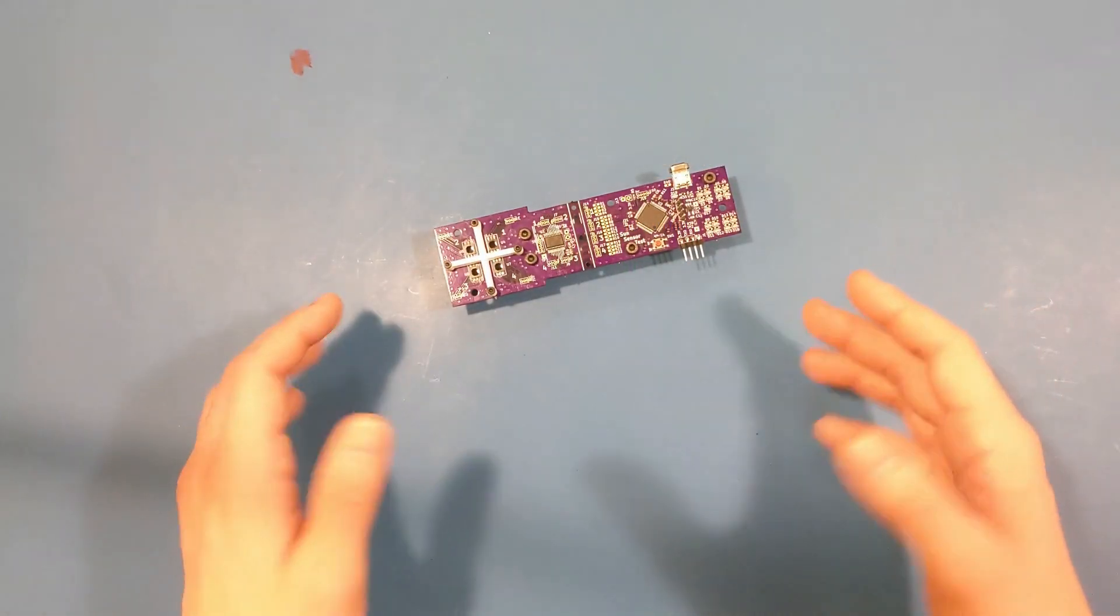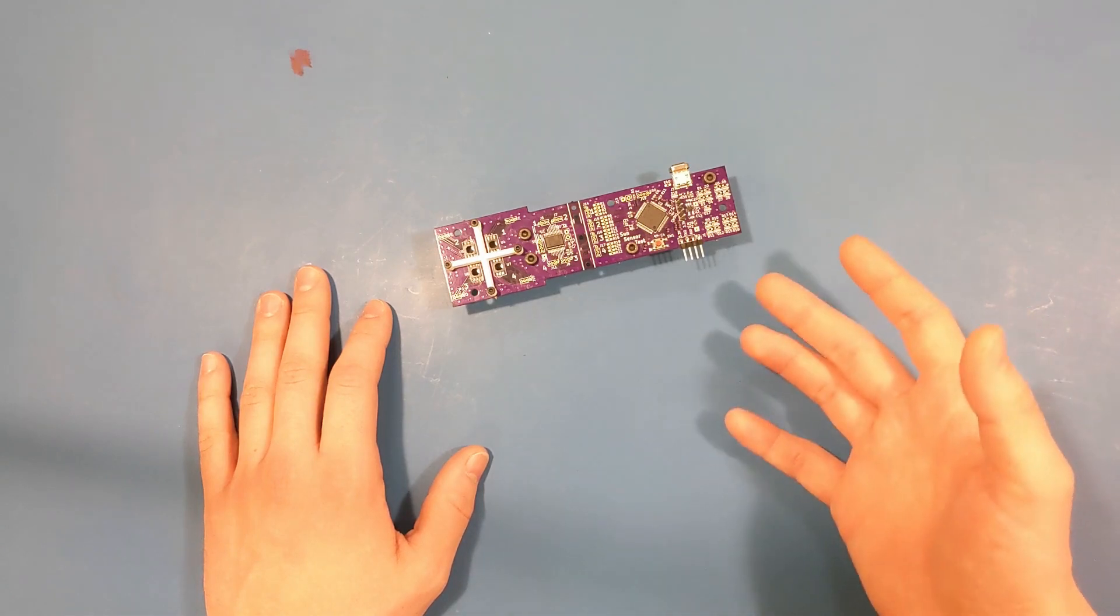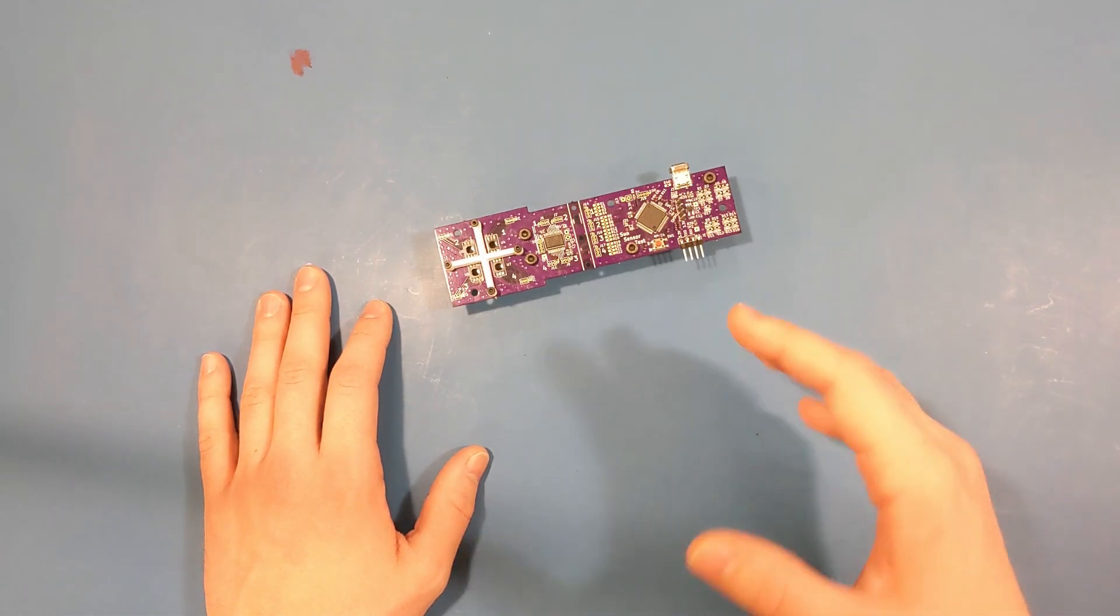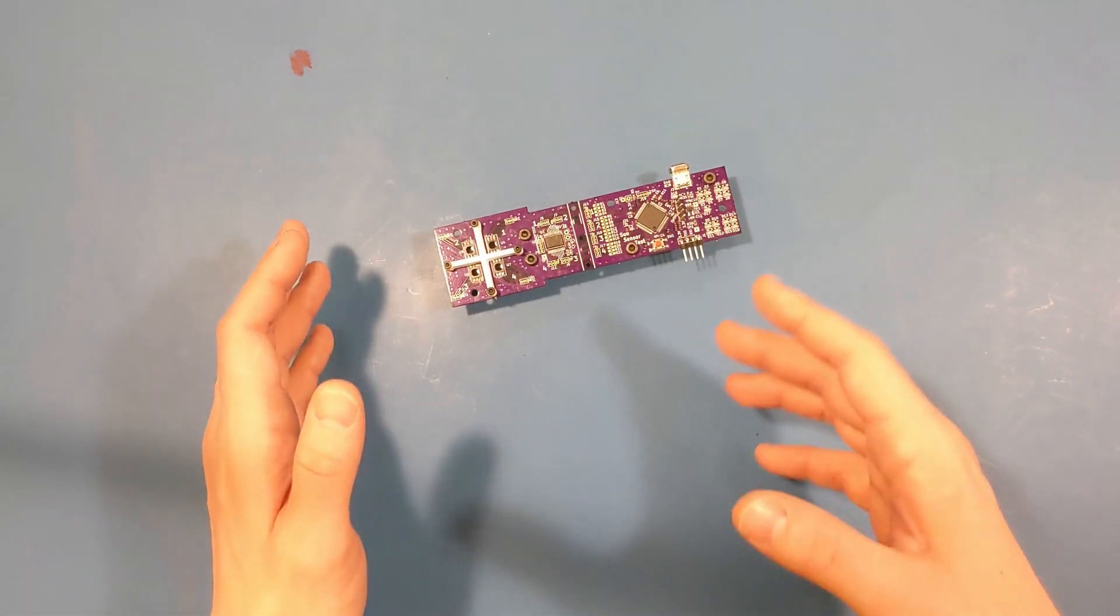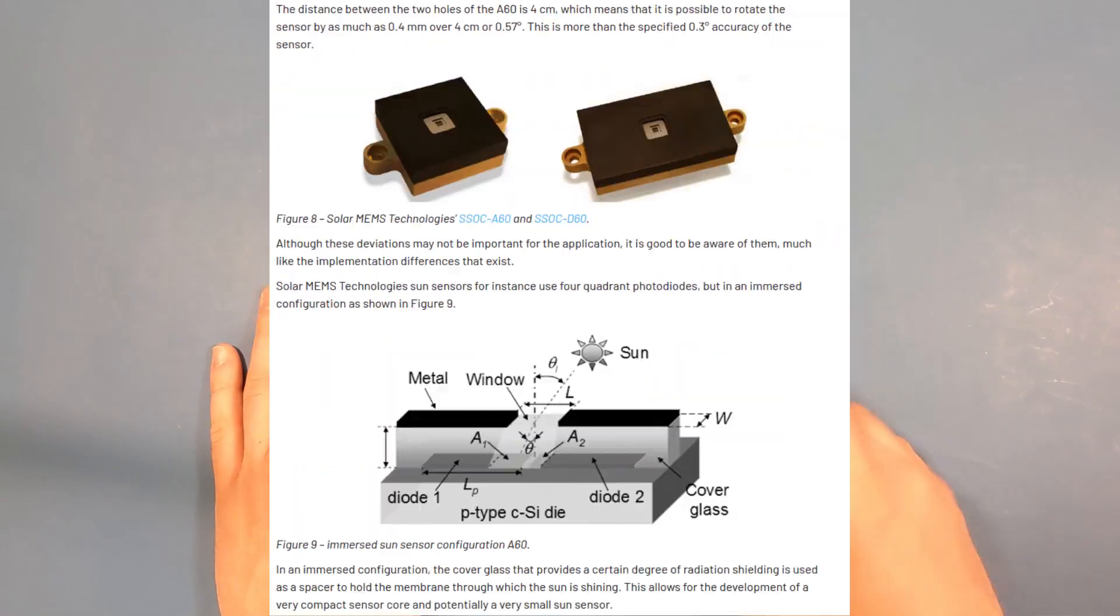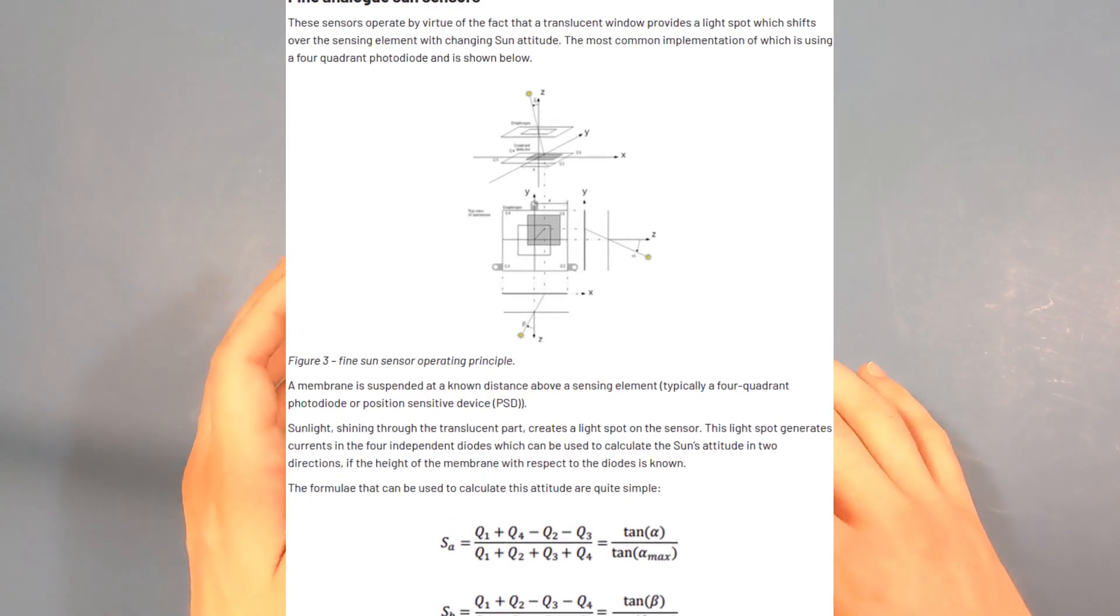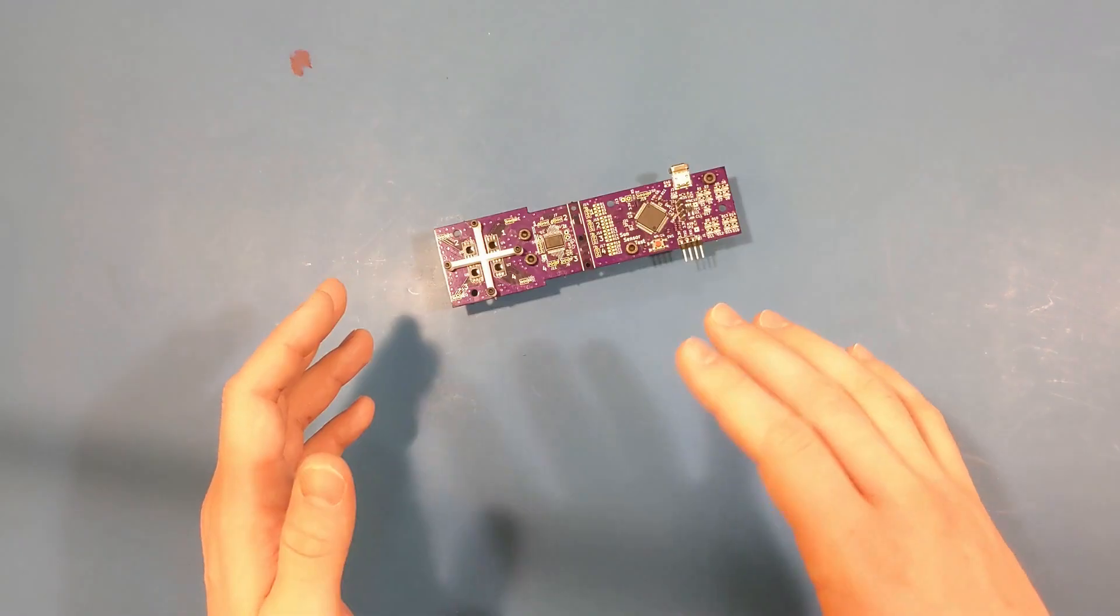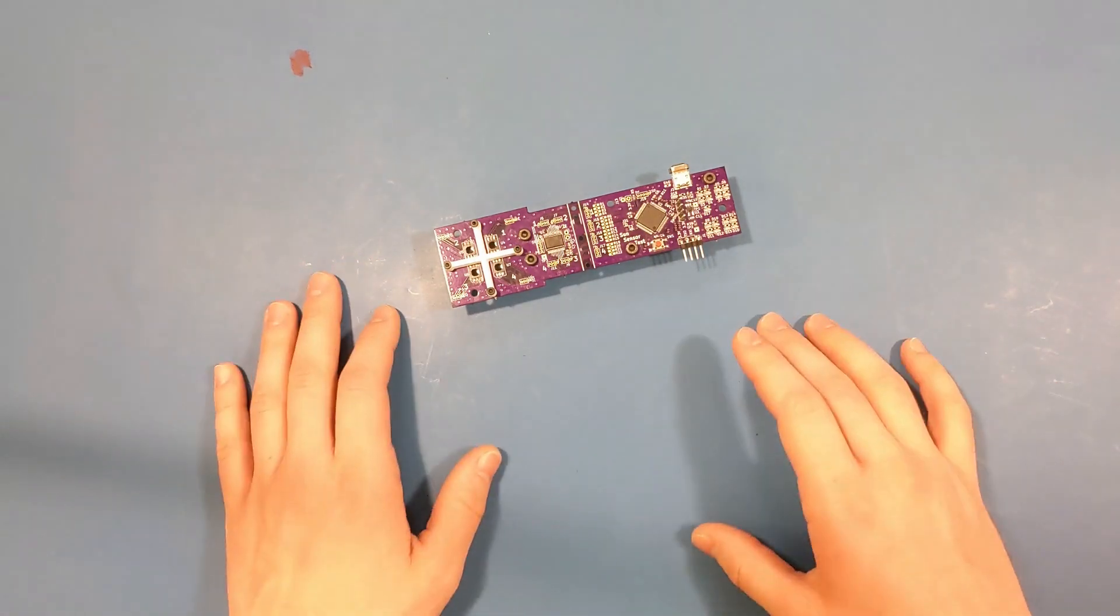Now, I'm not saying that these sensors are priced unfairly. These are certainly high quality sensors with flight heritage and are drop-in solutions. I just wanted to build a cheaper one for myself. And that's not the only sun sensor available. There are a fair number of them on the market. Check out this blog post from SatSearch, which is linked in the description, if you're looking for a good write-up of the different categories of sun sensors and what products are available in those categories.